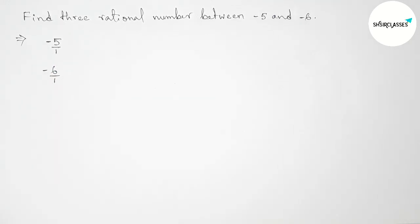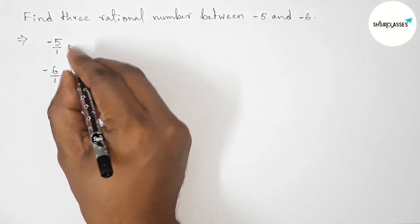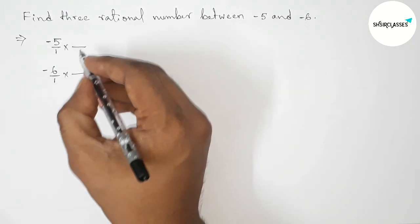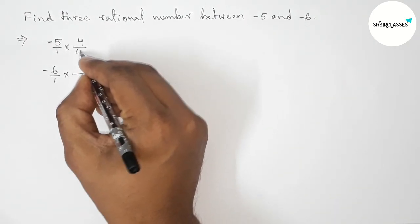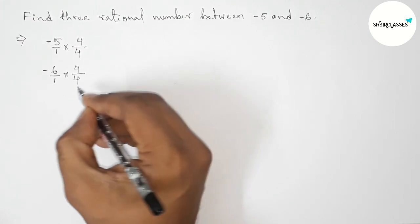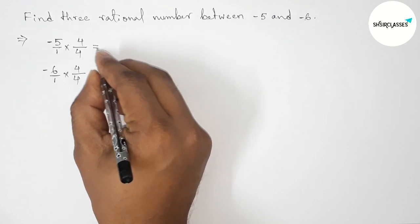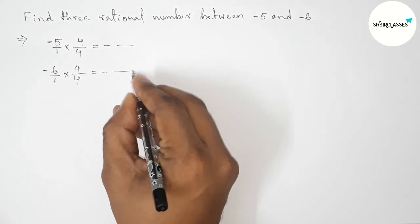We have to multiply both numbers. For three rational numbers, we have to take 4 up and down by this way. So now simplifying all this.